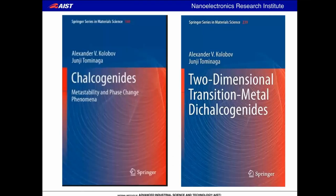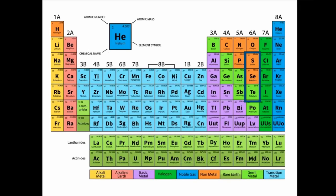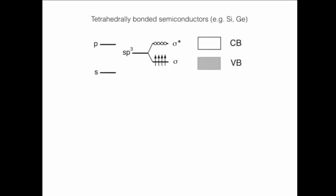Now we go to the materials themselves. Chalcogenide glasses contain sulfur or selenium — tellurium is usually a poor glass former. These materials are characterized by an unusual electronic structure: two S electrons and four P electrons. The P electrons are distributed as one on Px, one on Py, and two on Pz. The Px and Py electrons form covalent bonds, while the lone pair Pz electrons don't participate in chemical bonding — and this has a drastic effect on material properties.